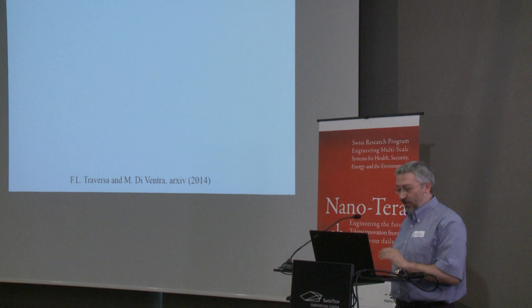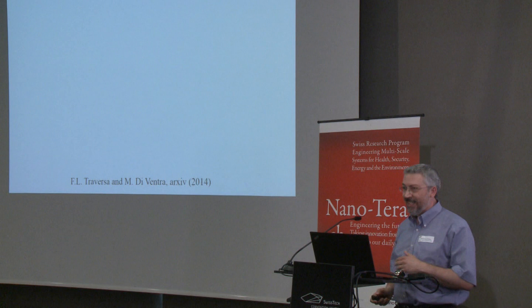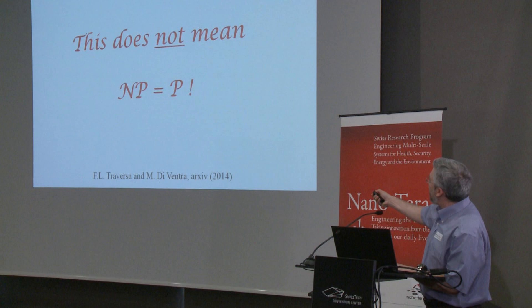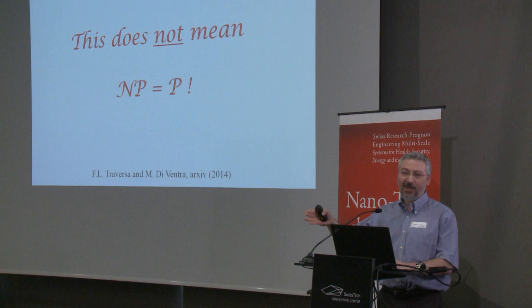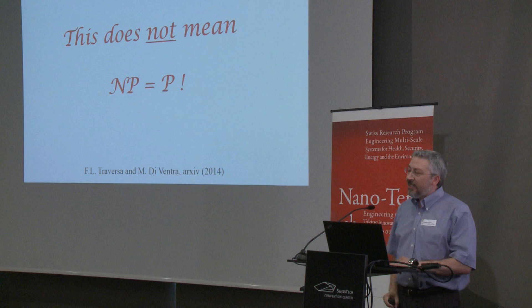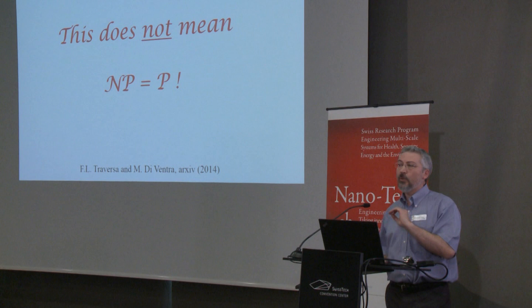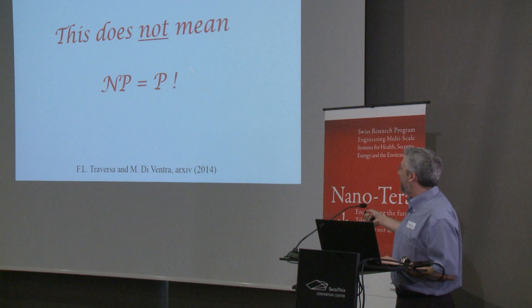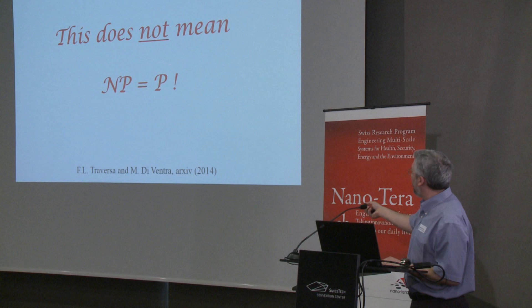Importantly, the fact that we solved NP-complete problems does not mean we have solved P equals NP. We received many emails from people worried we'd gone crazy. We did not solve P equals NP — that means solvable within the Turing paradigm only. We created a new paradigm that can solve NP-complete problems, but we did not show Turing machines can solve P equals NP. If we had, we would collect one million dollars from the Clay Institute, as that is one of the Millennium Prize Problems.